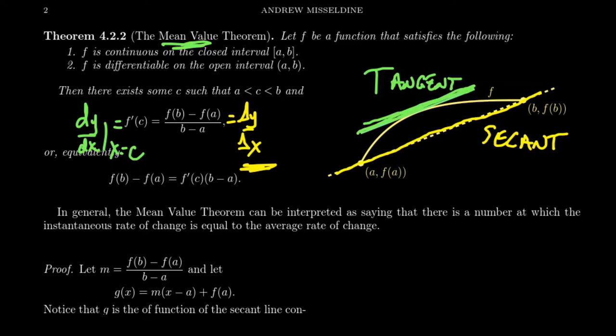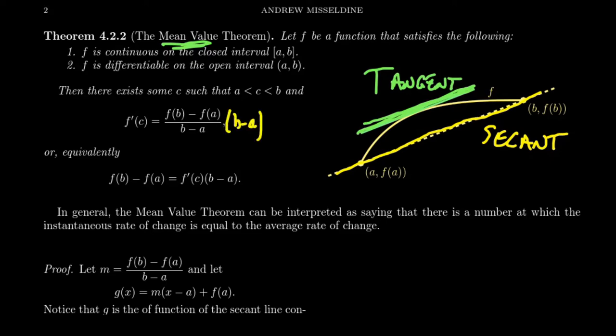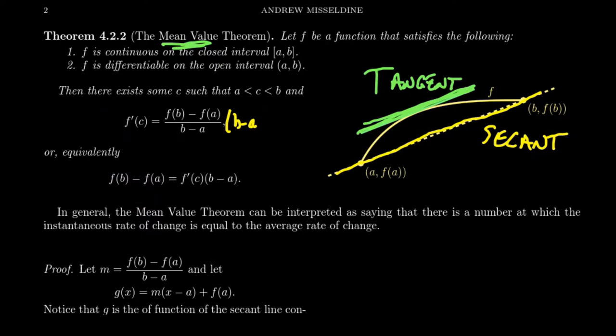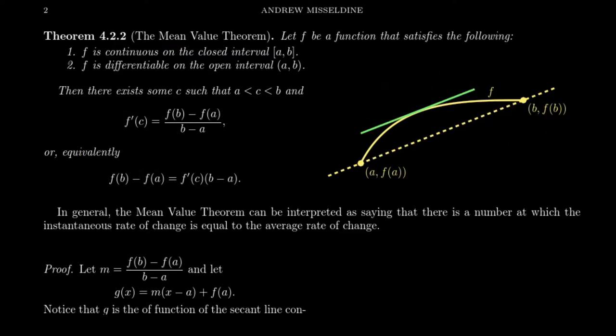If you take the equation f prime of c equals f of b minus f of a over b minus a, and clear the denominators by multiplying both sides by b minus a, you get an equivalent form that's sometimes useful. Now, before we prove the mean value theorem, let's consider a physical interpretation. We've already seen a geometric interpretation with tangent lines and secant lines.